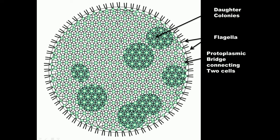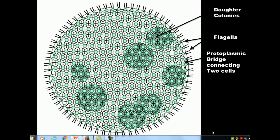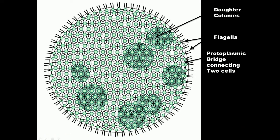The outside of the ball are these little colonial somatic cells with two flagella each, and each of these cells are connected by a protoplasmic bridge.